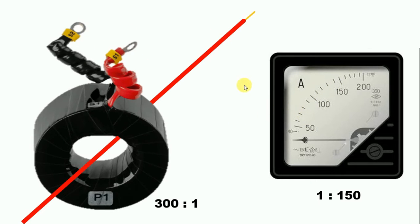Now the ammeter will convert this 1 ampere into 150 ampere or 300 ampere, as per its ratio. So what we need to do is select the ammeter as per the CT ratio.